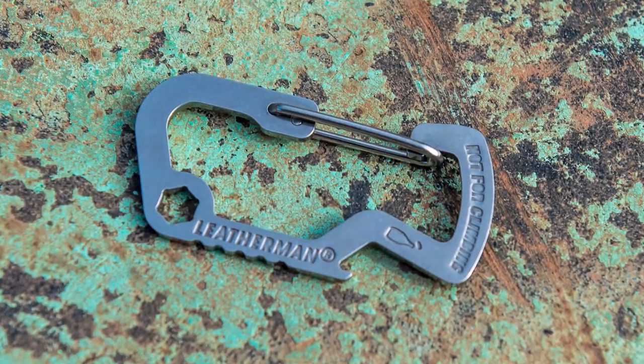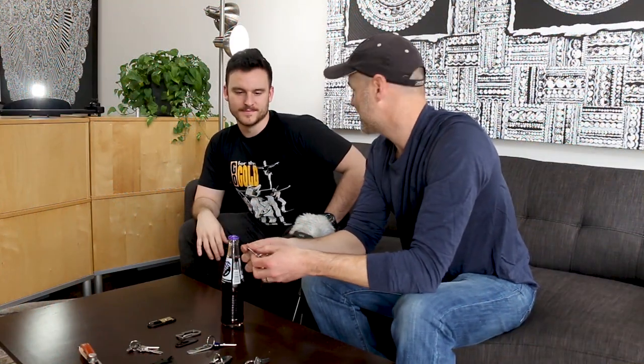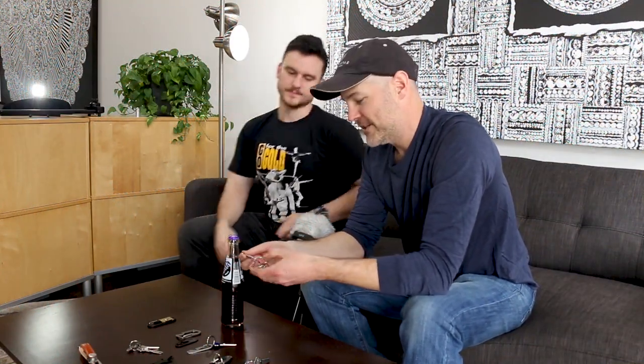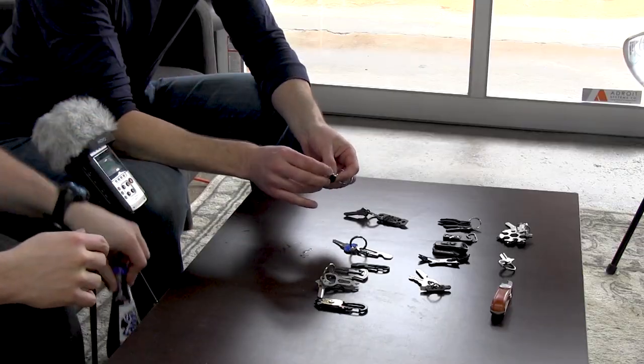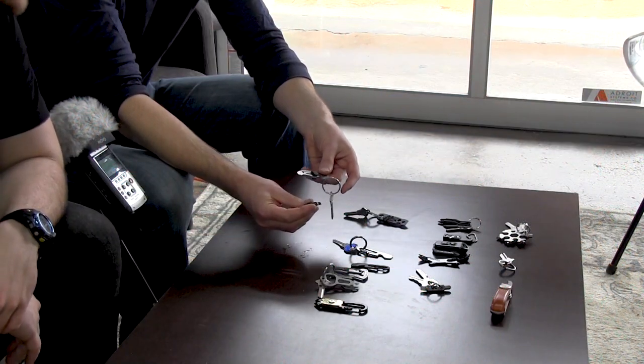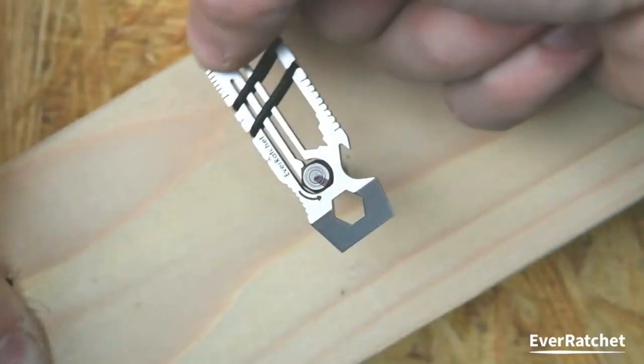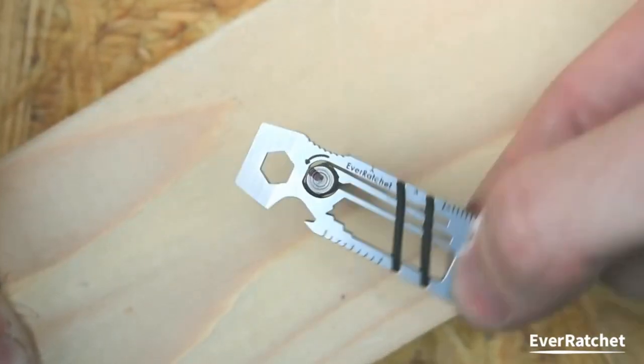Yeah, and then a lot of them will have, you know, flathead screwdriver—that's a pretty easy one. Pry bar is an easy one. Sometimes they have these add-on sections where you've actually got a little bit inside here. Right, and that fits in there.